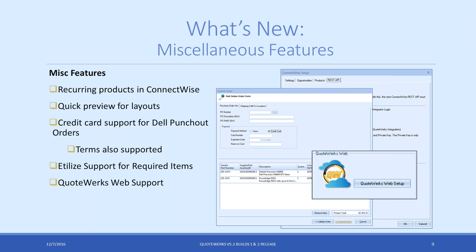A quick preview for layouts: for those who add cover pages and literature documentation — maybe 30-page documents that you send out regularly — you just want to see what the document is going to look like without those attachments. Now you can double-click on a layout and it'll do a quick preview, showing you what the layout looks like without any of those attachments. It makes it easier to preview without having to see static documents each time.